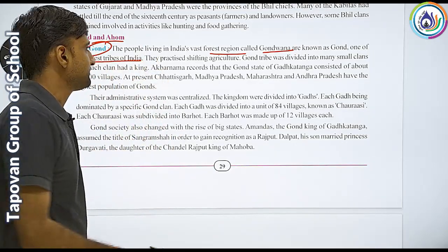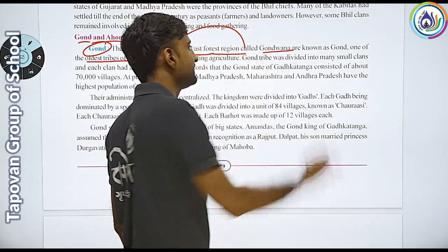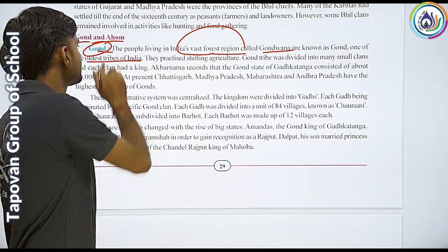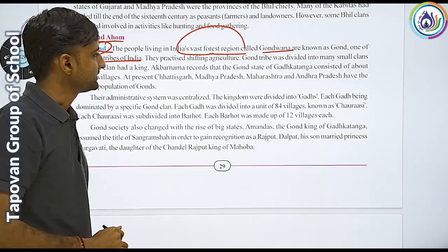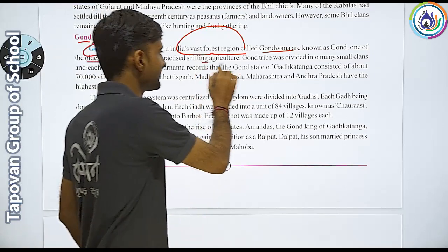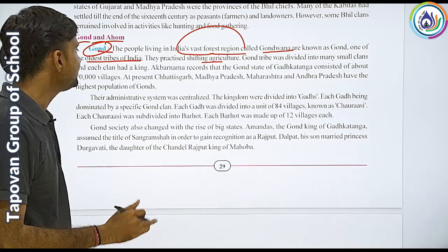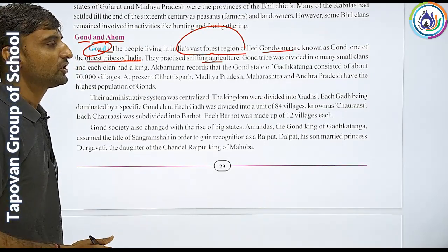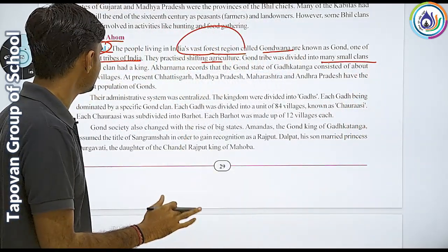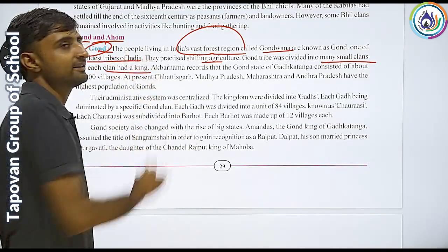Gond — speaking of the oldest tribes, those living in the forest regions of India are known as Gond or Gondwana tribes. They practiced shifting cultivation. Gond tribes were divided into many small clans and each clan had a king.